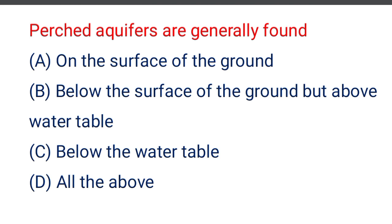Next question: perched aquifers are generally found — option A on the surface of the ground, option B below the surface of the ground but above the water table, option C below the water table. The correct answer is option B, below the surface of the ground but above the water table.